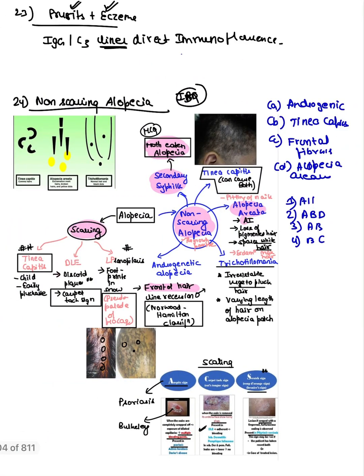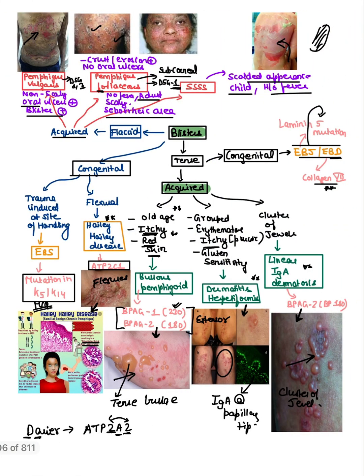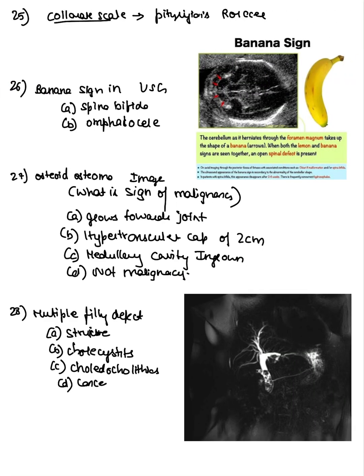The next question was on scarring alopecia. Options were: androgenic alopecia, tinea capitis, frontal fibrosing alopecia, and alopecia areata. Alopecia areata and androgenic alopecia are non-scarring; tinea capitis can be either. So the answer — frontal fibrosing alopecia — is the scarring type.